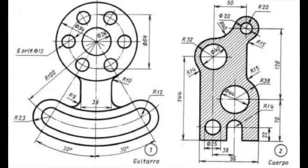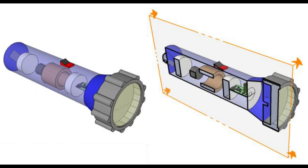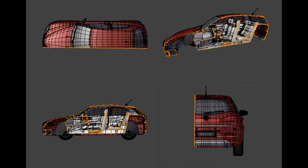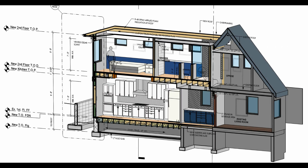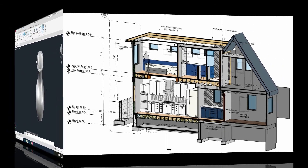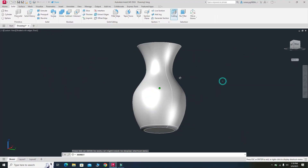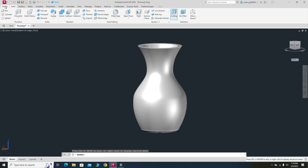Finally, I will show you how to create a section plane. This lets you view both 2D and 3D sections of your model so you can see its internal structure. These sections are used in automotive, industrial, civil engineering, and architecture applications. Now we will section this 3D model, so let's go to the Home tab.